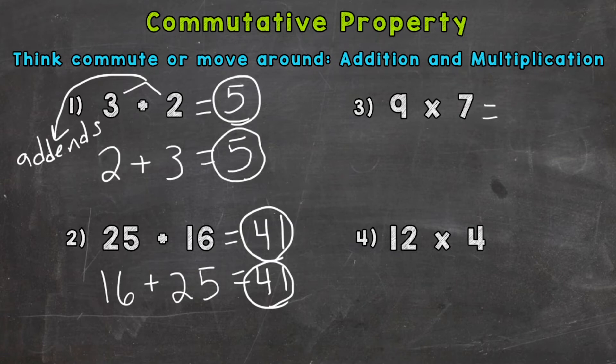9 × 7 gives us 63. Let's move the factors—these are called factors now when it comes to multiplication.